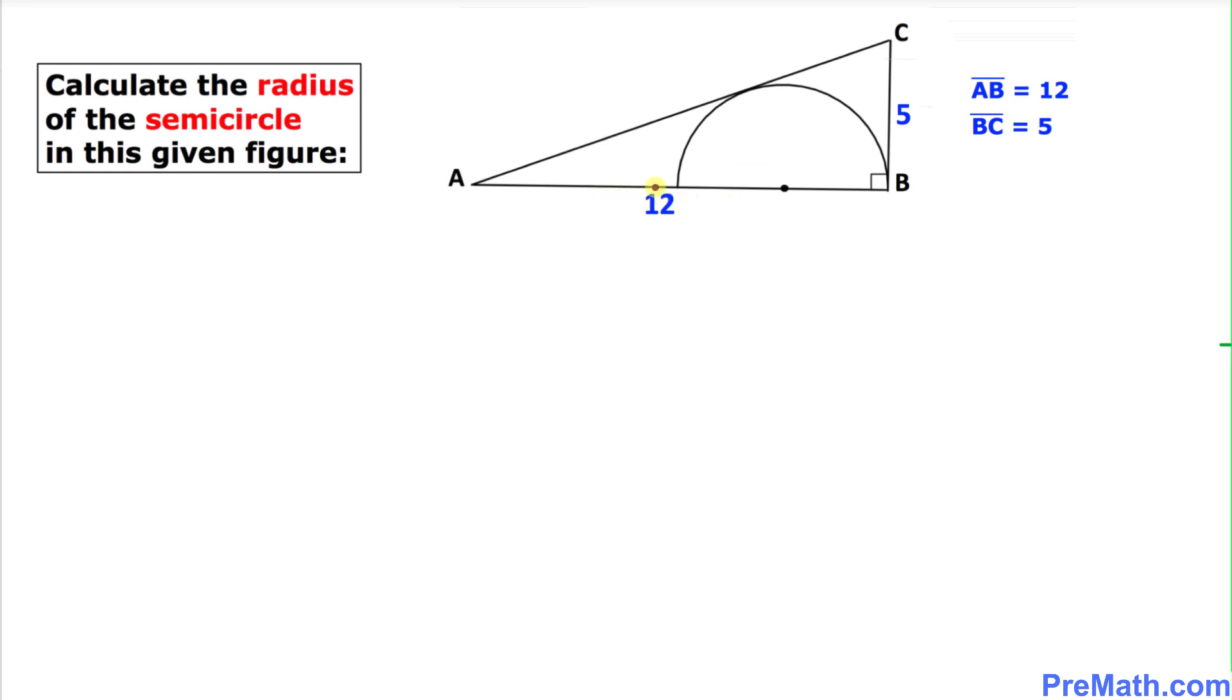In this given right triangle ABC, the segment AB is 12 units as you can see on this side, and the length of segment BC is 5 units. Here is our very first step: let's focus on this right triangle ABC.